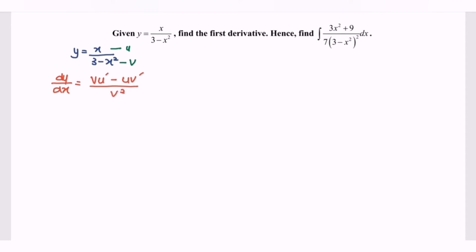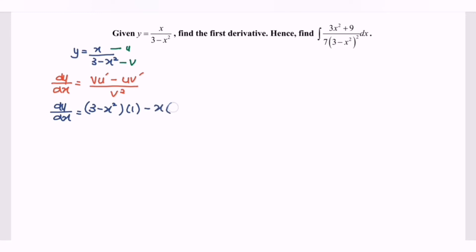Applying the quotient rule formula: dy/dx = v·u' - u·v' / v². Here v = (3 - x²), u' = 1, and v' = -2x, so we have (3 - x²)·(1) - x·(-2x), all over (3 - x²)².